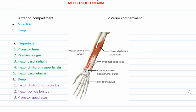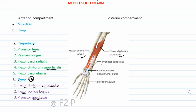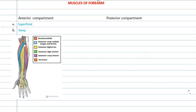Now let us memorize the three deeper muscles of the anterior compartment. Just as we have flexor digitorum superficialis in the superficial layer, we have flexor digitorum profundus in the deeper layer. And just as we have pronator teres, we have pronator quadratus in the deeper layer. The third muscle is flexor pollicis longus. So the three deep muscles are: flexor pollicis longus, flexor digitorum profundus, and pronator quadratus — lying together in a quadrant-like arrangement.